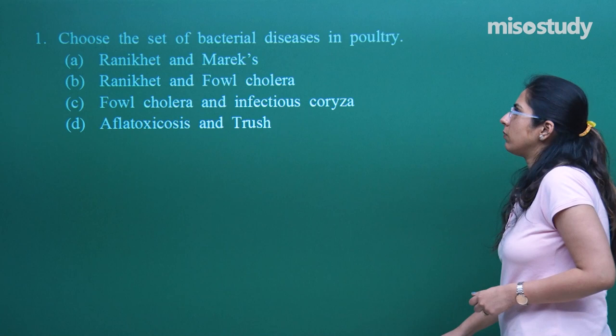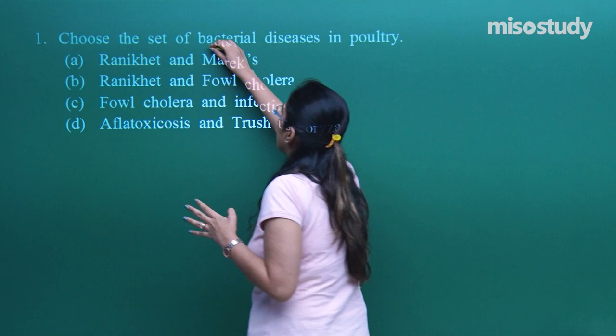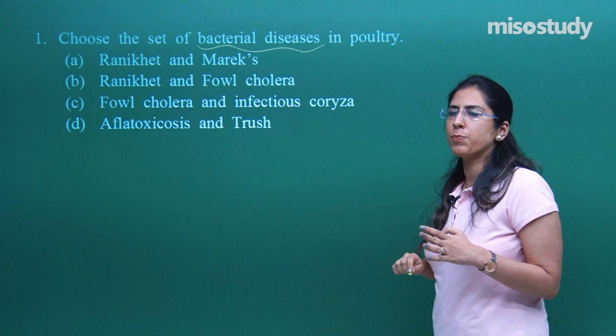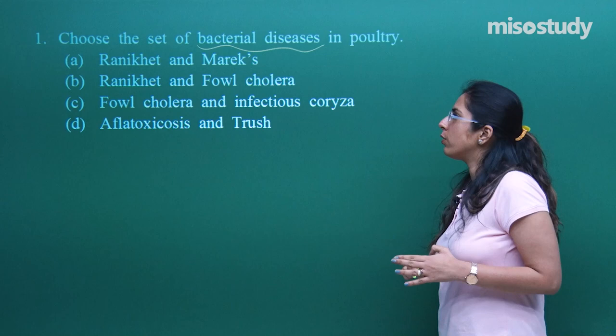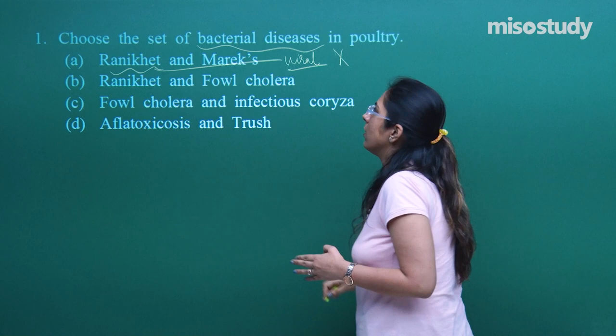Let us discuss the first question: choose a set of bacterial diseases in poultry. They are asking about diseases caused by bacteria, and we have to choose the two important bacterial diseases for poultry animals. When we talk about the first option, Ranikhet — this is a viral disease. So this option is wrong.